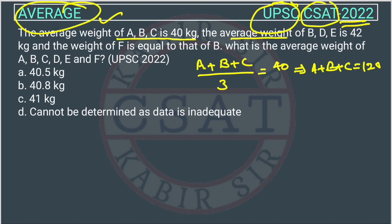The average weight of BDE is 42. B plus D plus E, this is the formula of average. This is given 42.